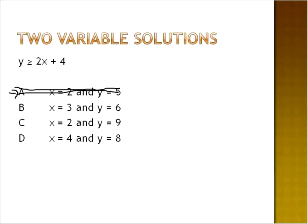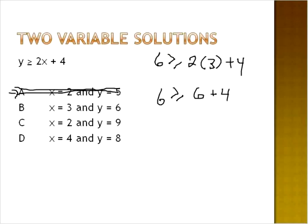Option B: X equals three and Y equals six. Six is greater than or equal to two times three plus four. Two times three is six plus four, giving six is greater than or equal to ten. No — ten is greater than six, so that is also not true.